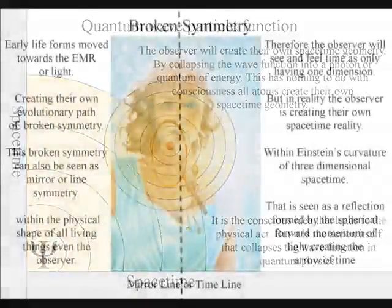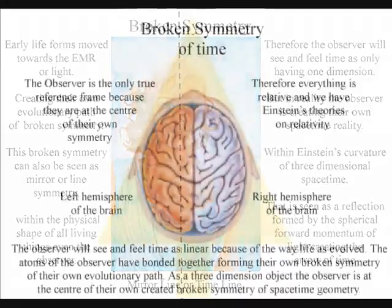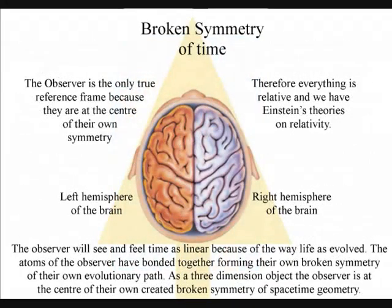The observer will see and feel time as only having one dimension, because there was an evolutionary advantage in seeing time this way. But in reality, the observer is creating their own space-time geometry within the fabric of Einstein's curvature of three-dimensional space-time.